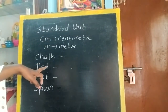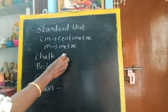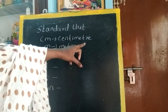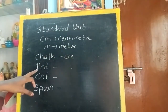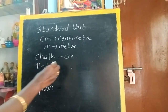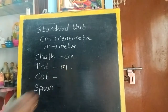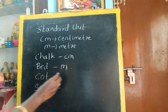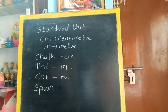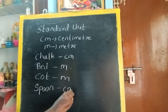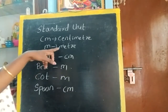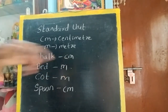Chalk — which unit will be used? Centimeter, because it is small. So we write cm. Now, bed — will it be small or big? It is long, right? So we have to use m, meter. Cot also is long, so we will use meter. Spoon — which unit will be used? That is centimeter. So the longer object will be measured using meter and the shorter one will be measured using centimeter.